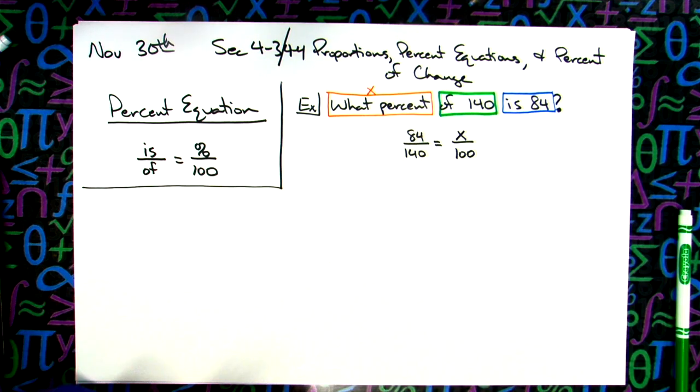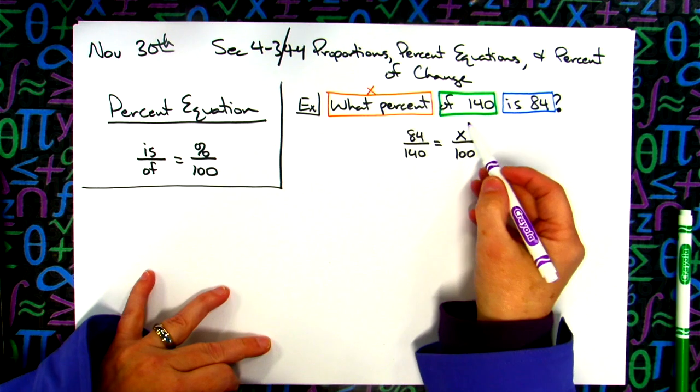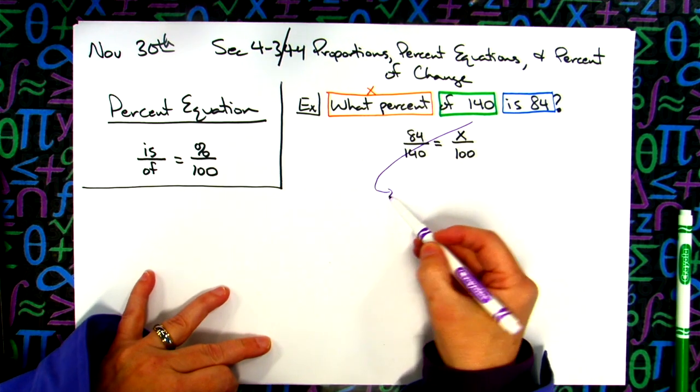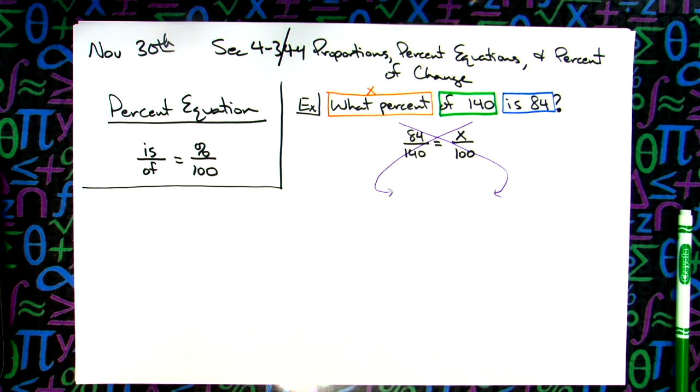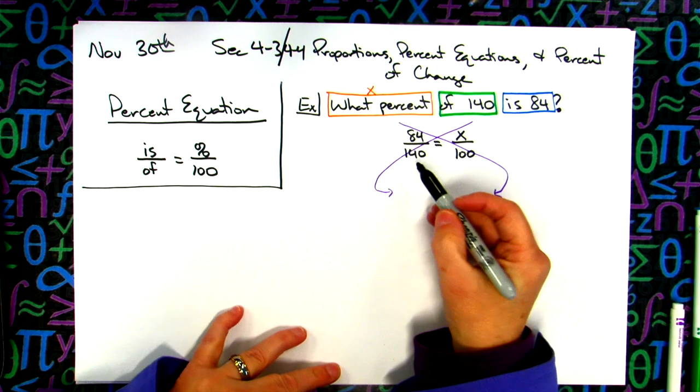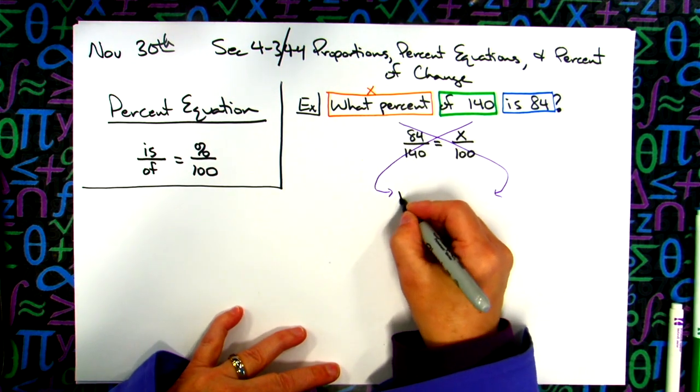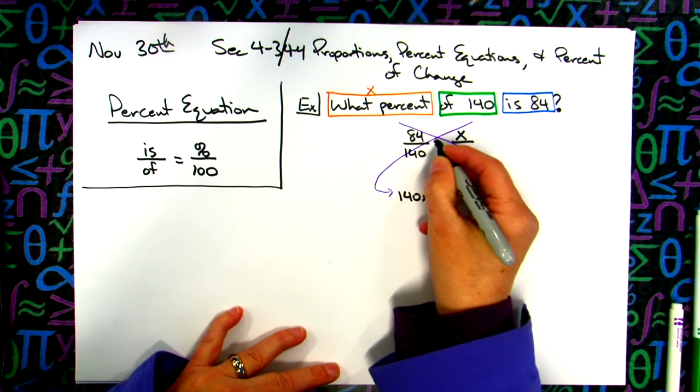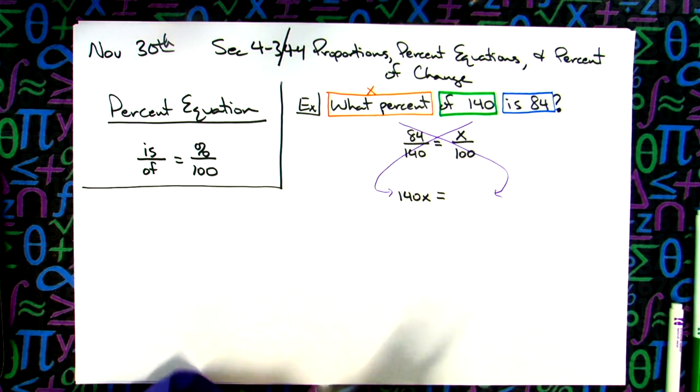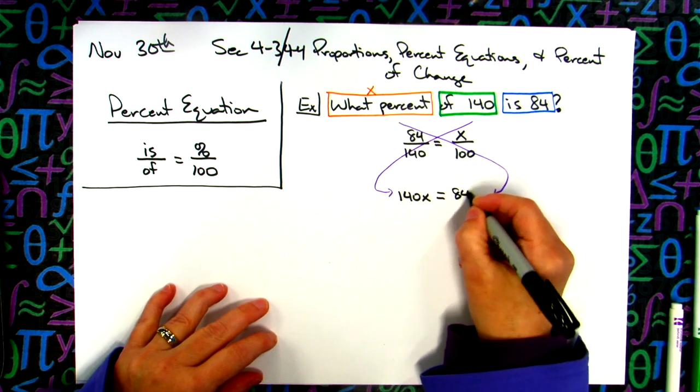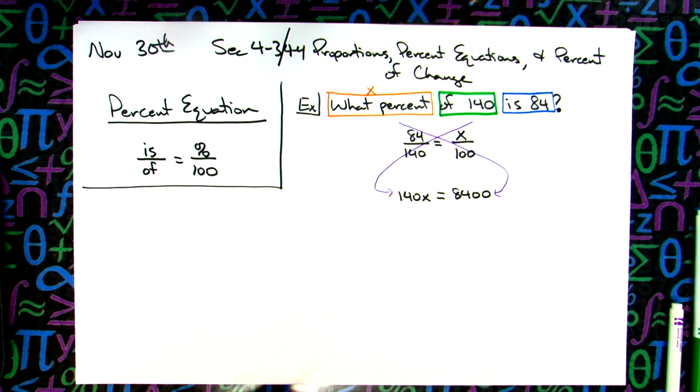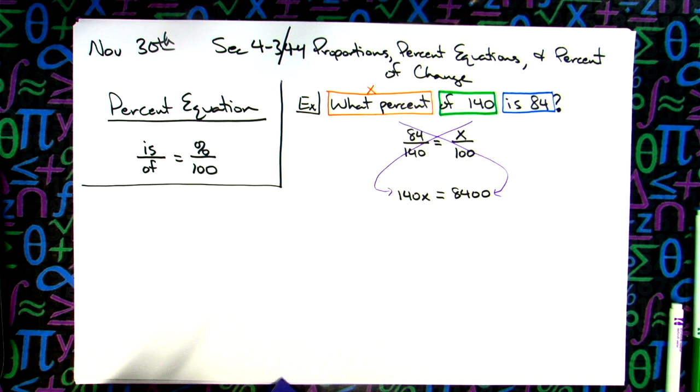From last week we learned how to cross multiply down. I did the little arrows to help you remember you are cross multiplying down. 140 times x is 140x. The equal sign comes straight down. 84 times 100, hopefully you can do that and not grab your calculator, 8400.